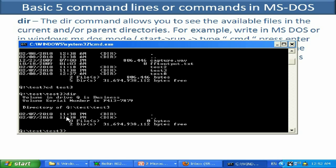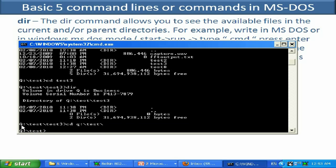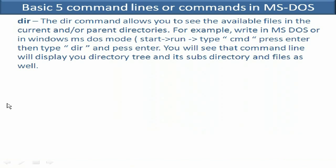To go back to a previous folder, you type the full path. For example, type CD followed by the drive letter and colon, then a backslash, then the folder name — such as CD Q:\test — and press Enter. That will bring us back to the test folder. So basically you type the full path to navigate to any folder you want.